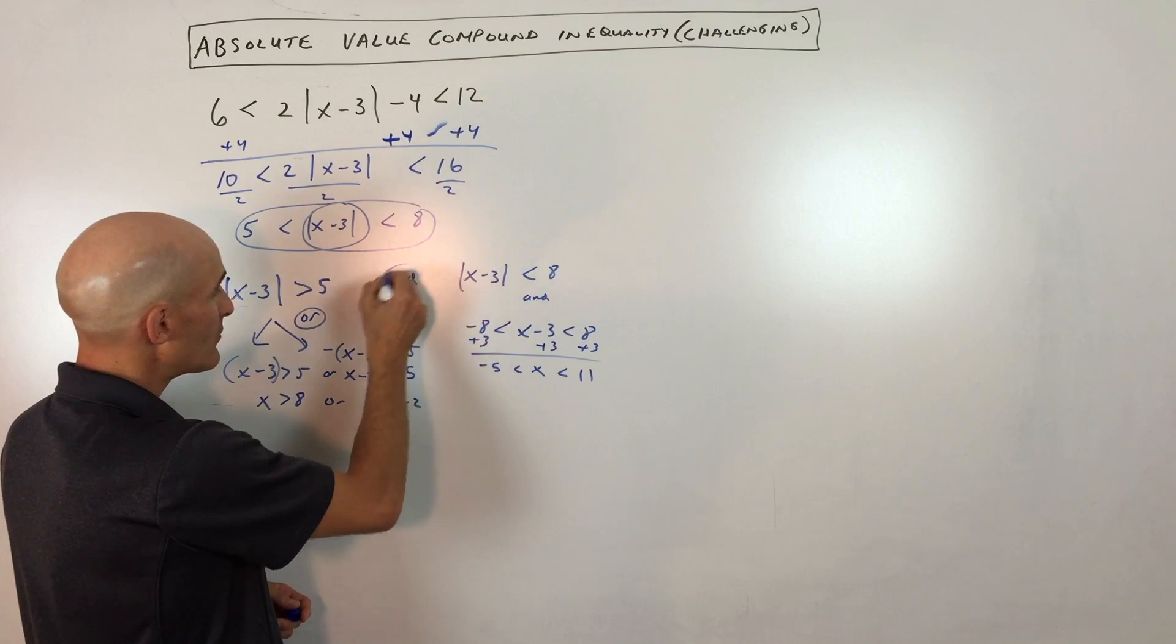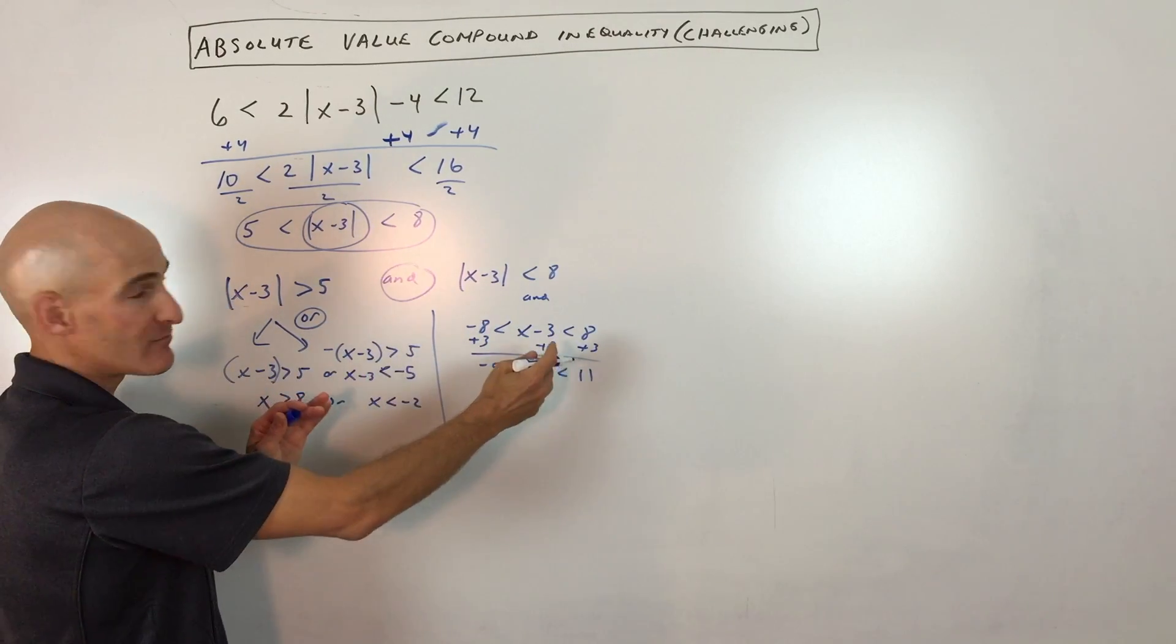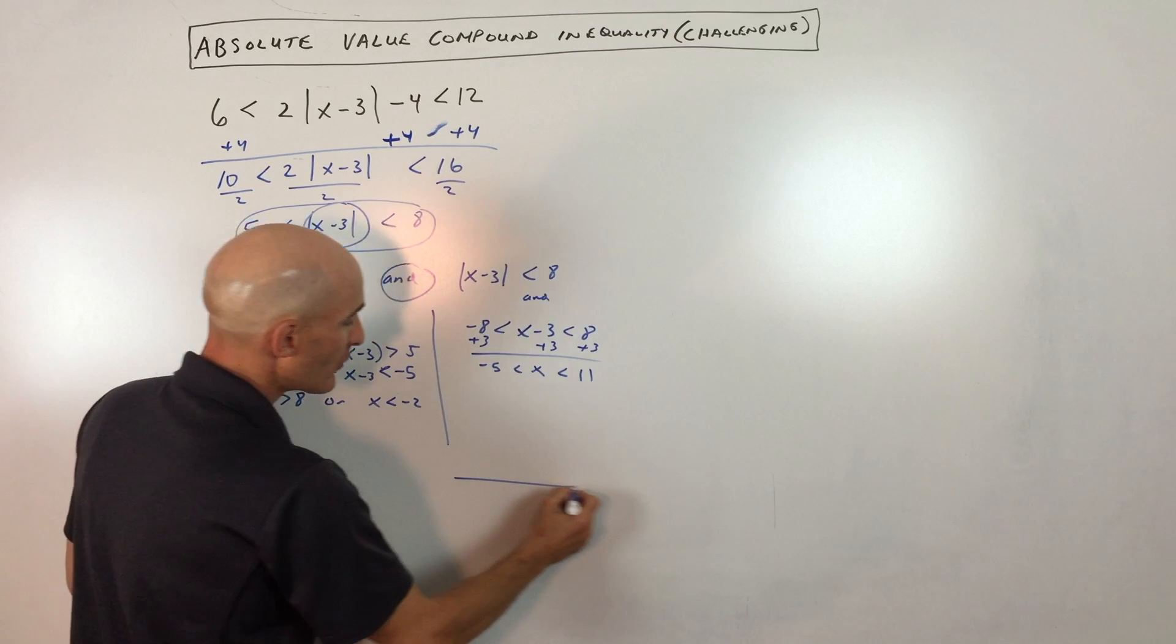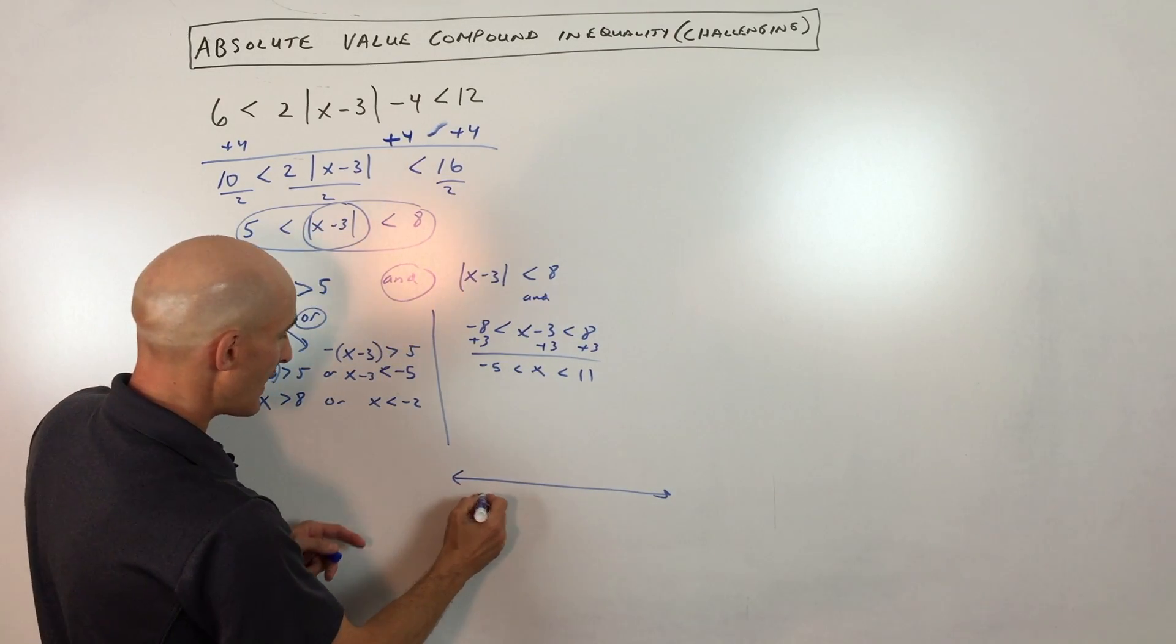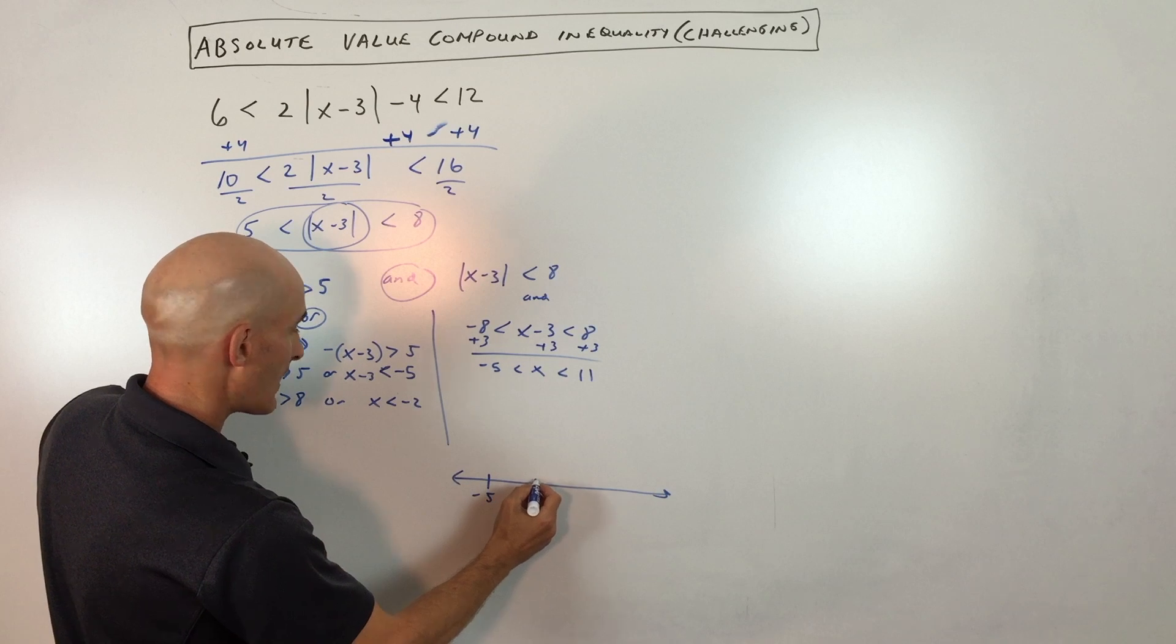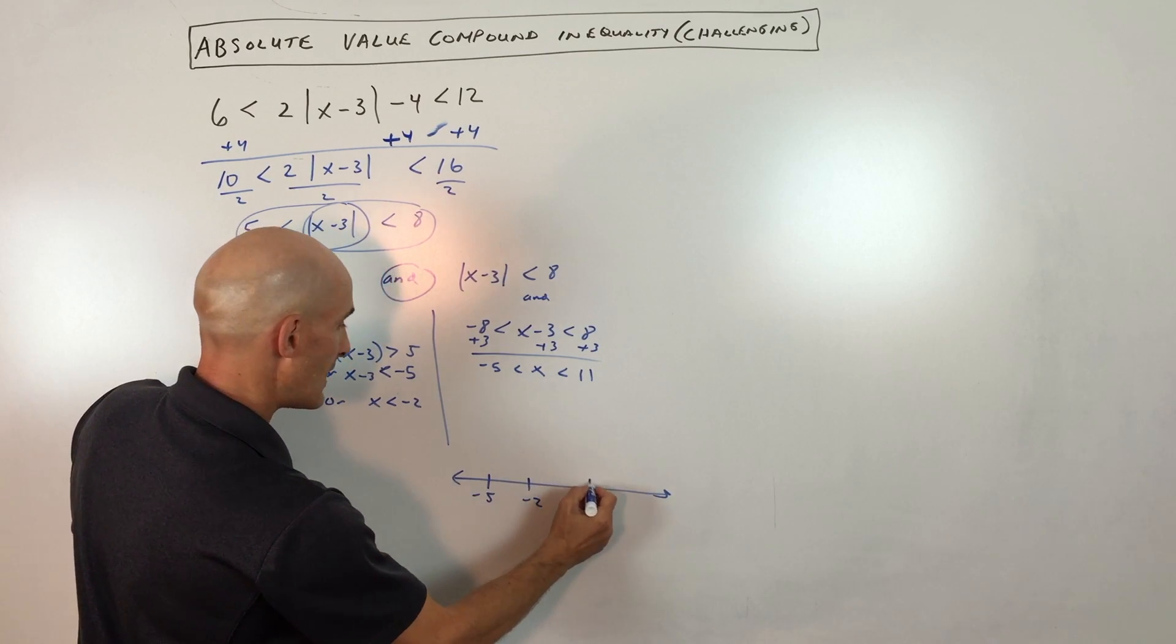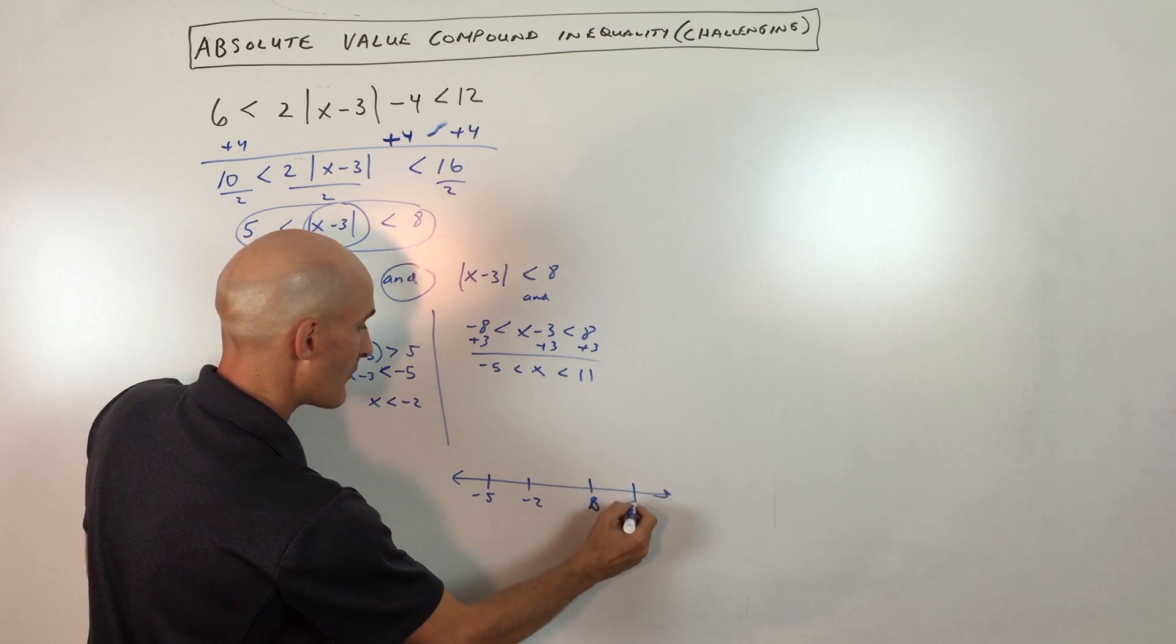Now what we're going to do, now keep in mind that we split this up into two parts, right? If we go to the number line and we graph this, what we have here is we have, let's see, we've got negative 5, we've got negative 2, we've got 8, and we have 11.